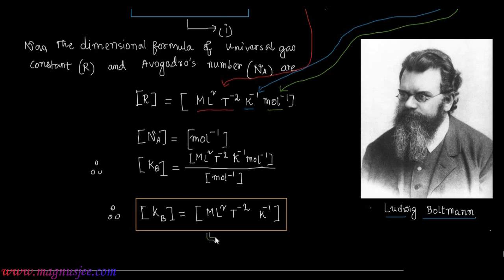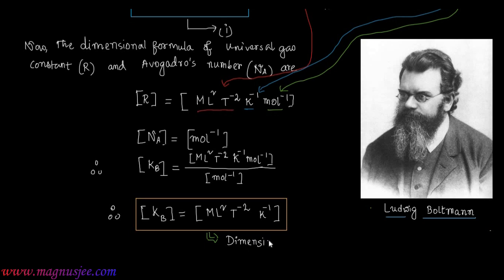So this is the dimensional formula of Boltzmann constant. The dimension of Kb is equal to ML²T⁻² Kelvin⁻¹, which is the dimensional formula of Boltzmann constant.